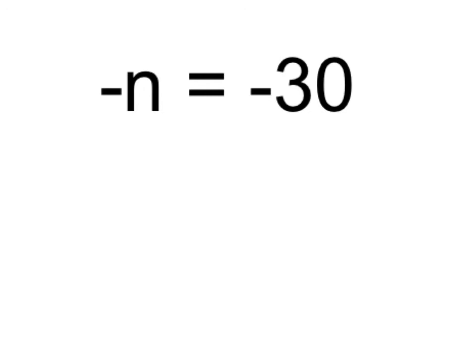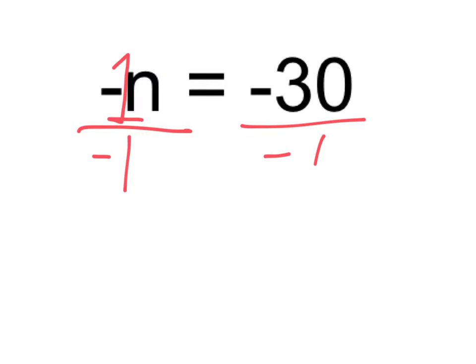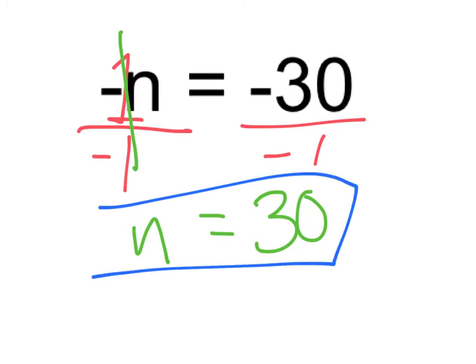Here we have a variable with an invisible coefficient. It says negative n equals negative 30, and we can put in that invisible one — so this is negative 1 times n. Let's divide both sides by negative 1. When we do that, the negative 1s cancel out, so all we're left with is n. And negative 30 divided by negative 1 is 30 — the negatives cancel out. n equals 30.